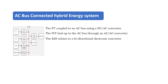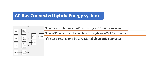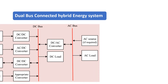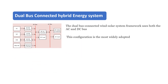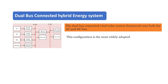In AC bus connected architecture, the PV is coupled to an AC bus using a DC-AC converter, and the wind turbine is tied to the AC bus through an AC-AC converter. The ESS connects via a bi-directional electronic converter. The dual bus connected wind-solar system uses both AC and DC buses, and is the most widely adopted due to its flexibility to combine energy sources and loads irrespectively.